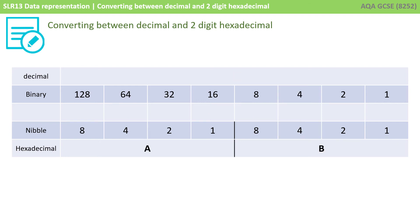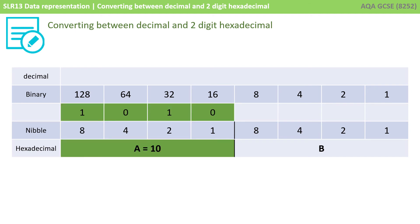So you might be asked to convert the other way. You might be given a two-digit hexadecimal value like AB and be told to write out the decimal equivalent. Again, simply take this through binary first. We'll take the left-hand hex digit A. You know that A represents 10, so let's write 10 into that mini binary line on the left — that's one eight, zero fours, one two, and zero ones. Eight plus two, so that's 10.